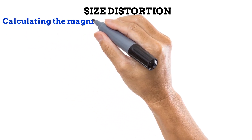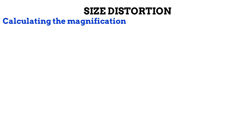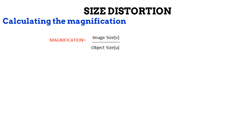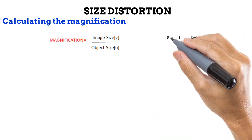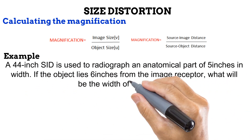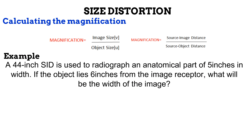We can also estimate the amount of magnification that would occur when the OID is increased and no compensation is made. Do you remember this formula from high school physics? Magnification equals image size divided by object size. We'll also be making use of a new but related formula: magnification equals source image distance divided by source object distance. Let us practice this with an example. A 44 inch SID is used to radiograph an anatomy that is five inches in width. If the object lies six inches from the image receptor, what will be the width of the image? From the question, we can establish that the SID is 44 inches. Remember when we said in the last video that source object distance, SOD,